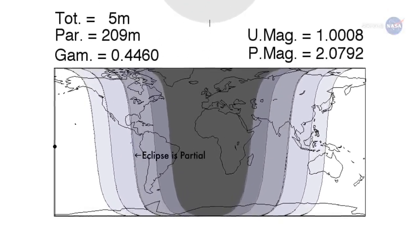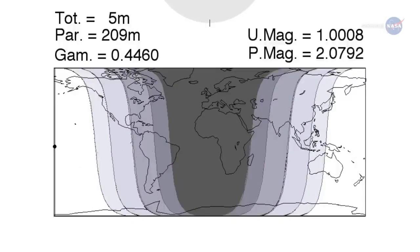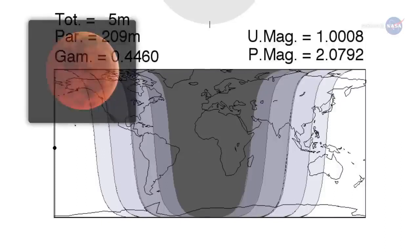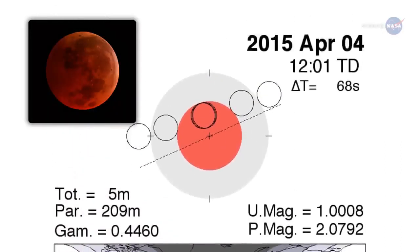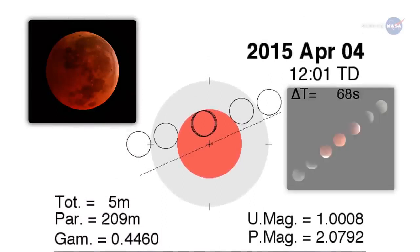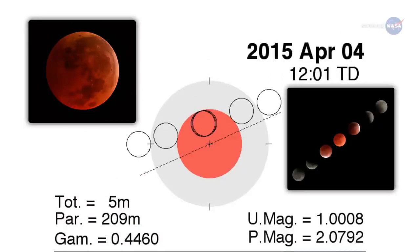People east of the Mississippi can only see a partial eclipse. West of the Mississippi, people can see the whole thing, including totality. Totality is when the Moon is fully inside Earth's shadow. Some total eclipses last for more than an hour; in this case, however, totality spans just 4 minutes and 43 seconds.